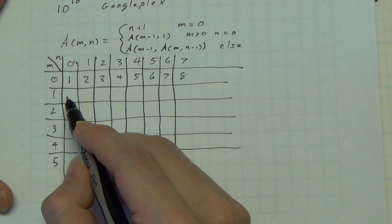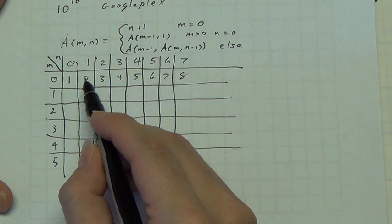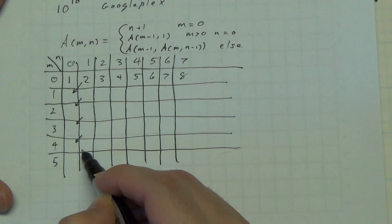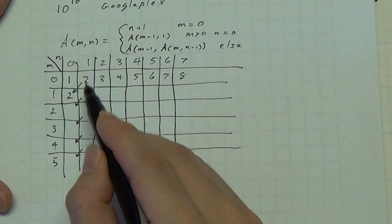Now, whenever you have an n is equal to 0, you go up one row, m minus 1, and the first column after the 0, so all these go down here in the Ackermann function, 2. Now,